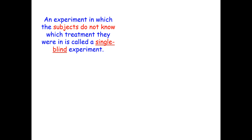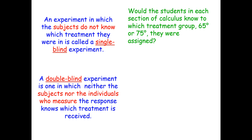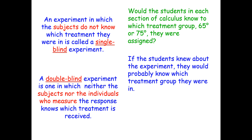An experiment in which the subjects do not know which treatment they're in is called a single-blind experiment. A double-blind experiment is one in which both the subjects being measured and the people doing the measuring do not know which treatment is being received. Would the students in each calculus section know which treatment group they were assigned to — 65 degrees or 75 degrees? Given the big temperature difference, this experiment is probably not blinded.